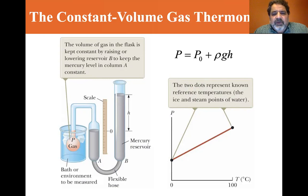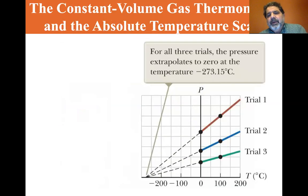So if you do this for different temperatures that you can represent, you'll form a line. The two dots represent known reference temperatures, the ice and steam points of water. Now it doesn't really matter what different type of gases you use, they all have the property that if you were to draw the line, and they would all intersect, they would all extrapolate to a temperature of minus 273.15 degrees Celsius, and this minus 273.15 is the absolute temperature. That's the absolute zero.